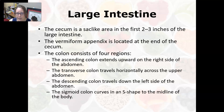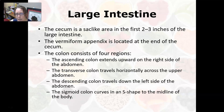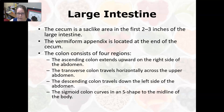The cecum is a sac-like area in the first two to three inches of the large intestine near where it connects to the small intestine. The appendix, which is vermiform or worm-like, hangs from the end of the cecum and is part of the immune system. The colon has four regions: the ascending colon extends upward on the right side of the abdomen; the transverse colon travels horizontally across the upper abdomen; the descending colon travels down the left side; and the sigmoid colon curves in an S-shape to the midline.